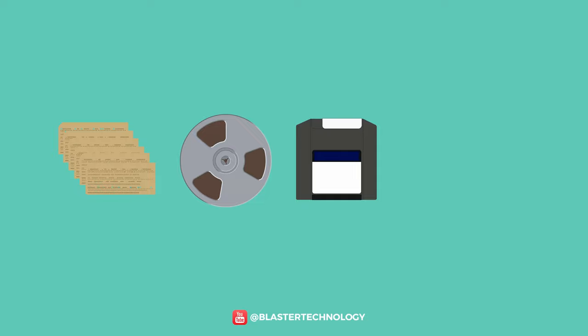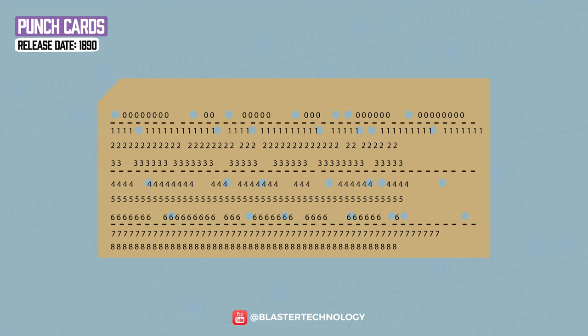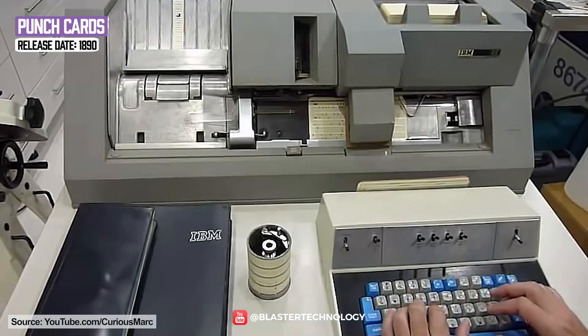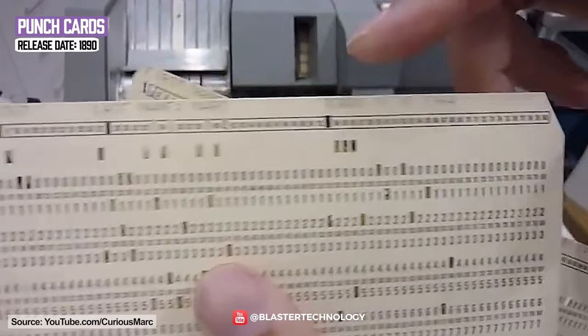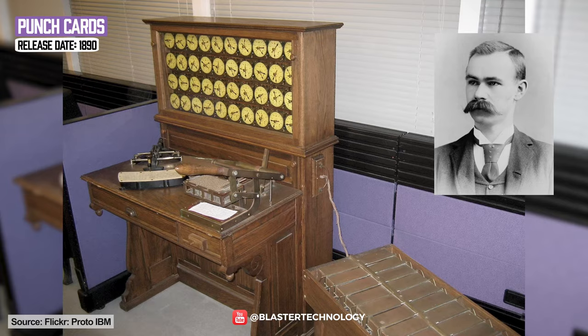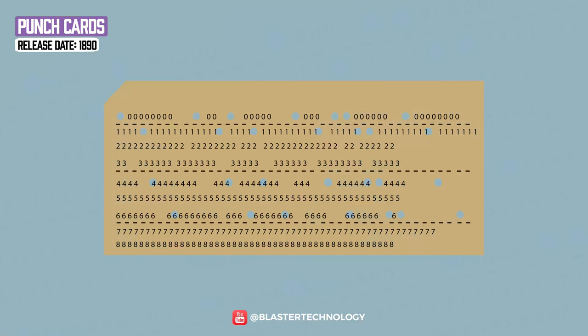Punch cards were the first official form of data storage. These were pieces of perforated paper where the holes are one and the non-holes are zero, being inserted into the computer by photoelectric scanning. In 1890, Herman Hollerith invented the tabulation machine using these cards, which could read and record data up to 0.12 kilobytes.